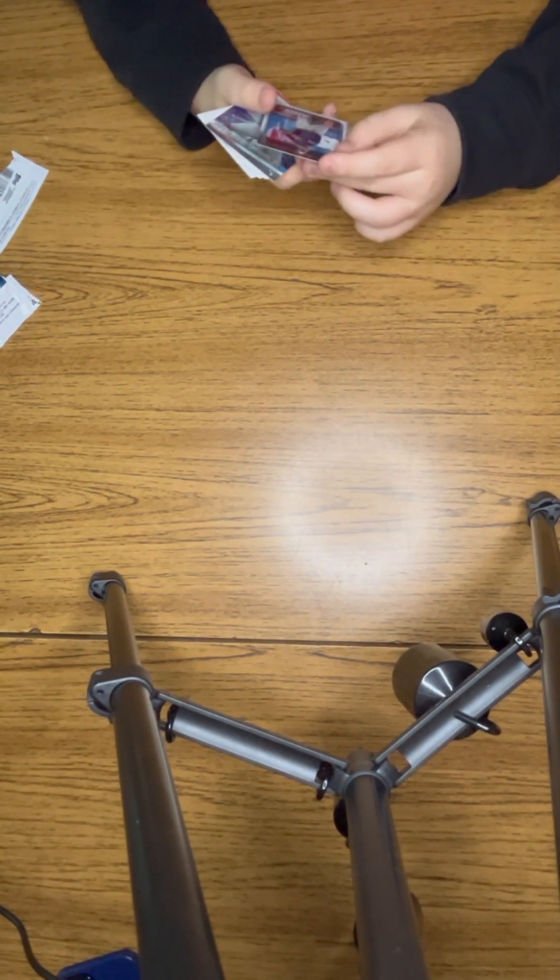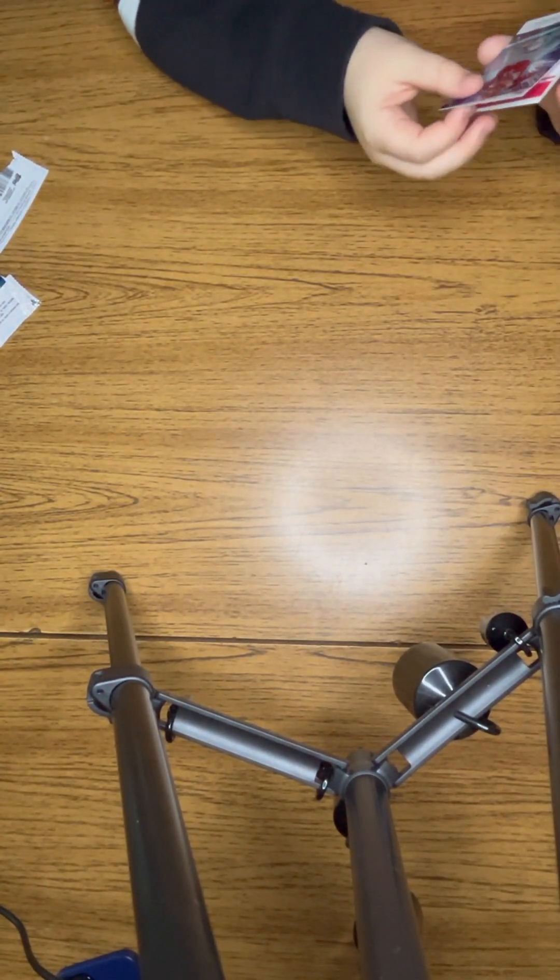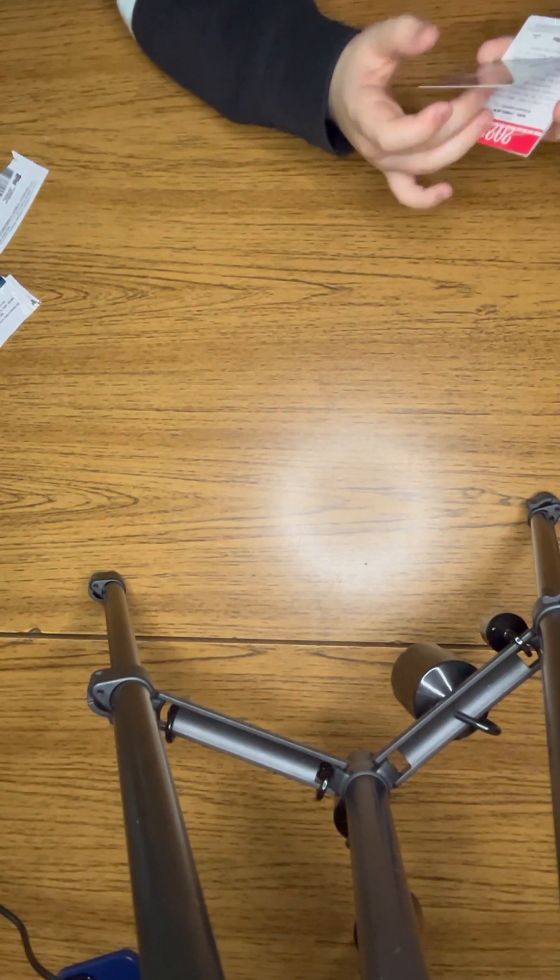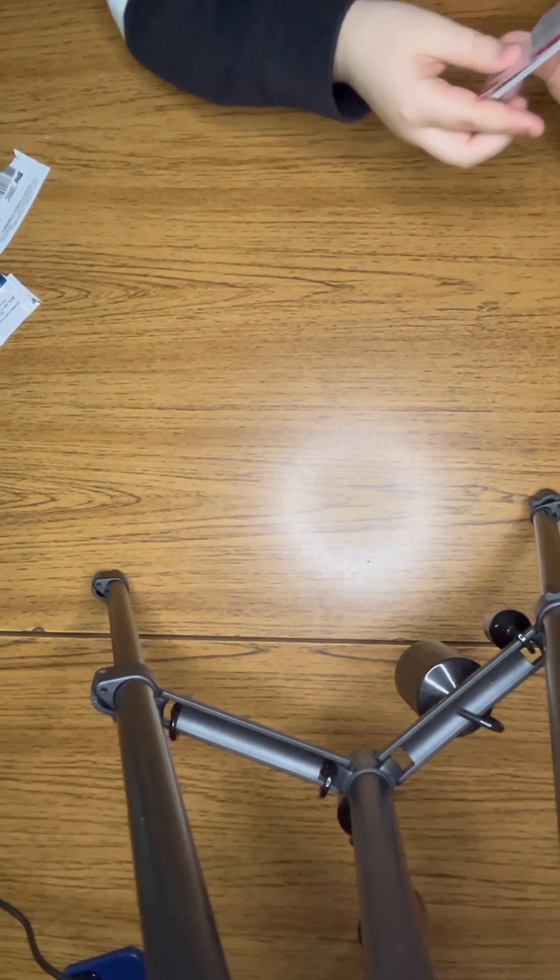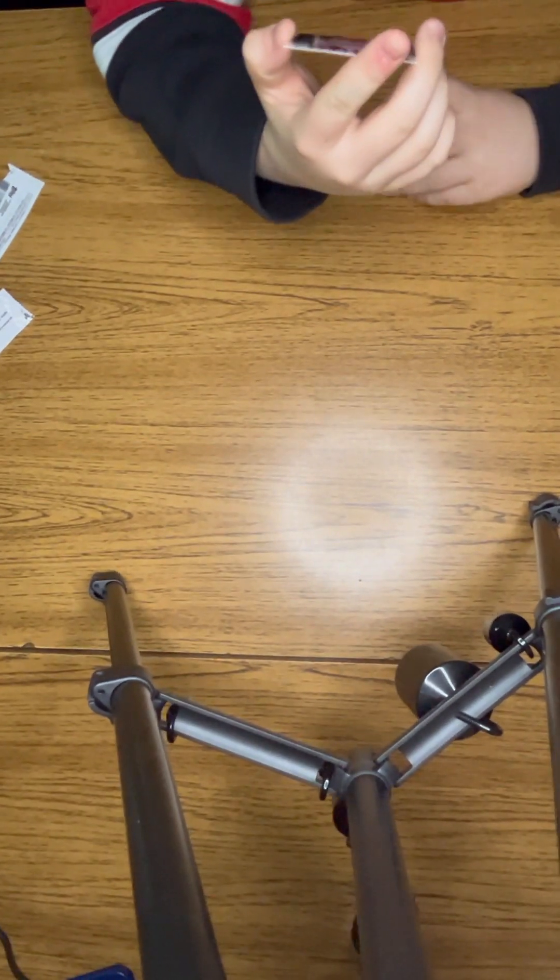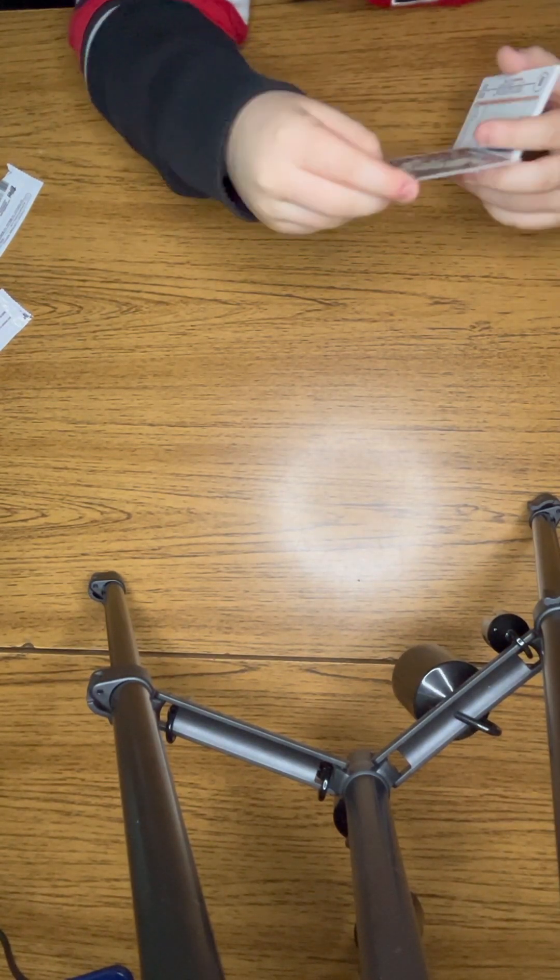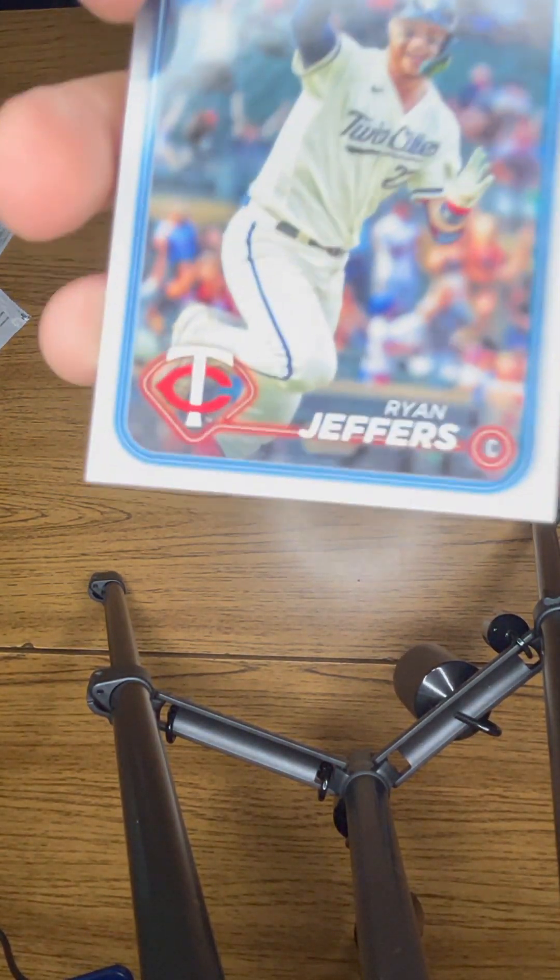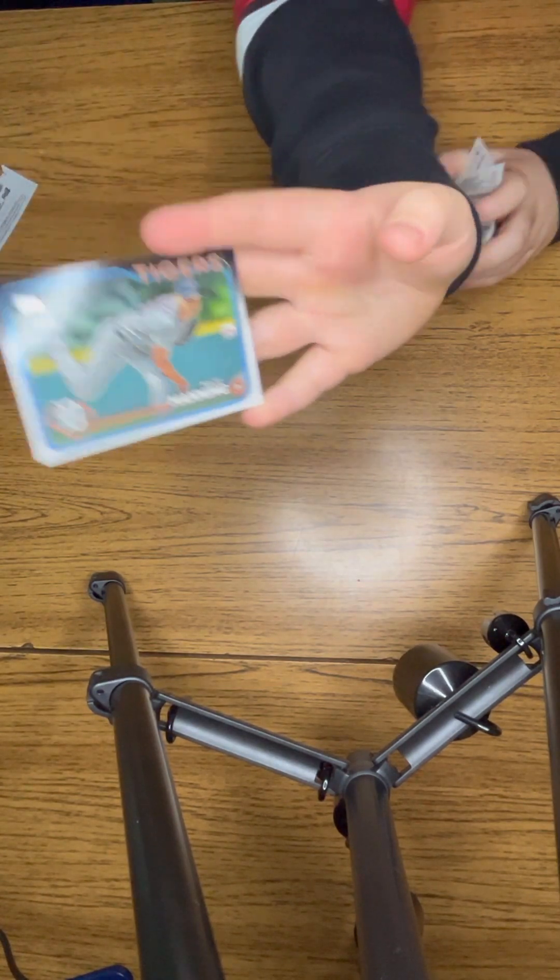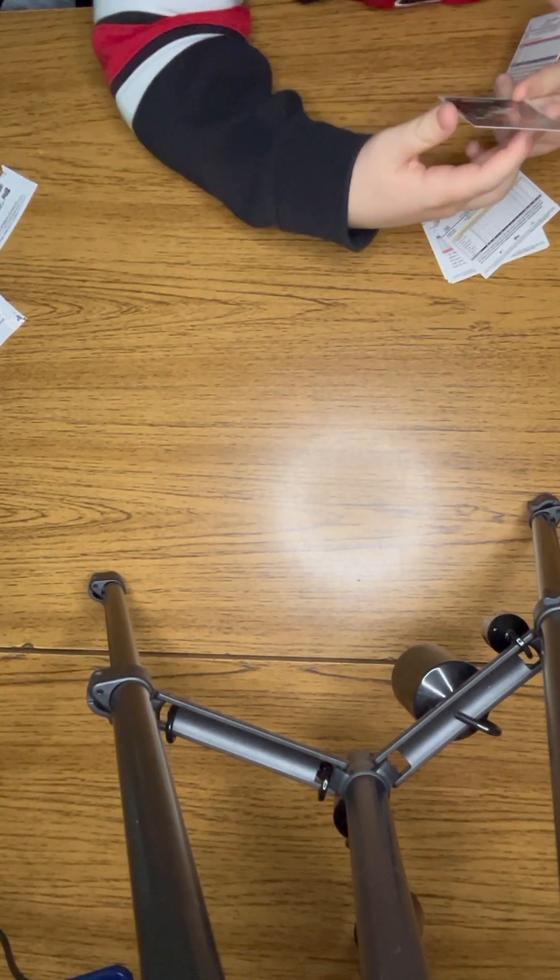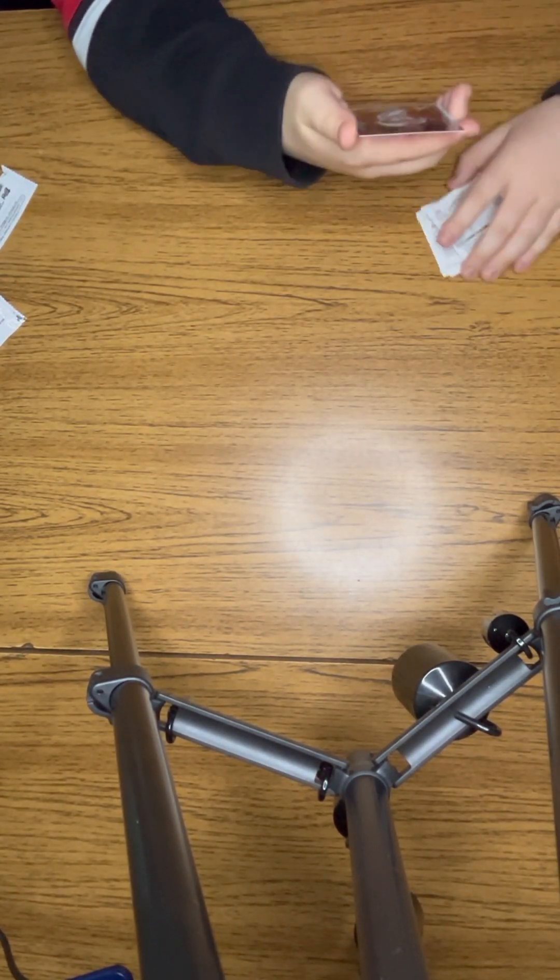For our third pack we have a Kenley Jansen from the Boston Red Sox, a Star of the MLB Christian Encarnacion-Strand rookie card from the Reds, a 2023 South Florida three hits in debut rookie, a Twins Ryan Jeffers, a Tigers Matt Manning, and a Giants rookie Marco Luciano.